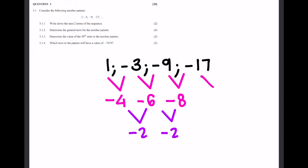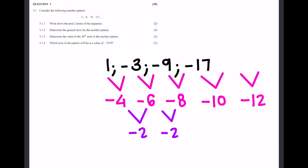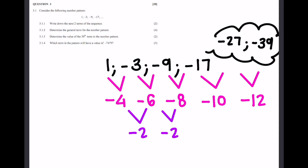So the next two first differences are going to be minus 10 and minus 12. We can then calculate the next two terms: minus 17 minus 10 is negative 27, and negative 27 minus 12 is minus 39. So the next two terms in the sequence are minus 27 and minus 39.